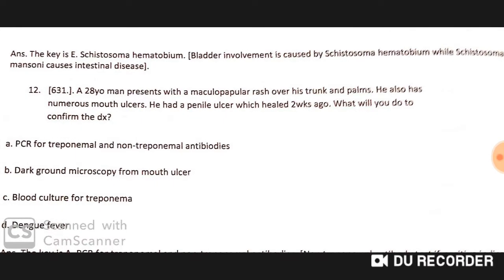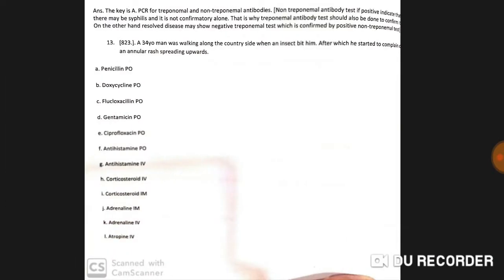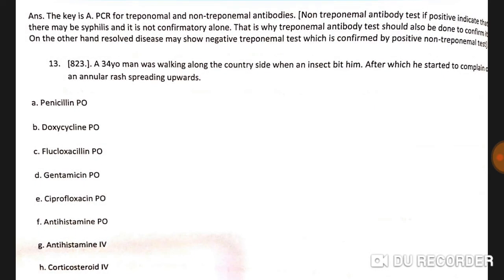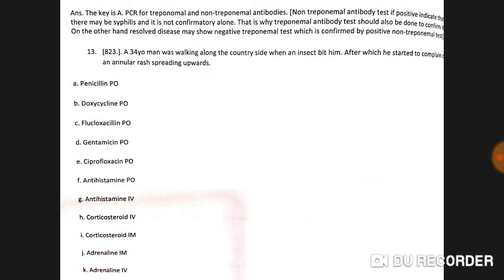A 28-year-old man presents with a maculopapular rash over his trunk and palms, numerous mouth ulcers, and had a penile ulcer that healed two weeks ago. To confirm the diagnosis, perform PCR with both treponemal and non-treponemal antibodies. Non-treponemal antibody tests alone are not confirmatory for syphilis; treponemal antibodies must also be done. Resolved disease may yield a negative treponemal test, so both are needed.